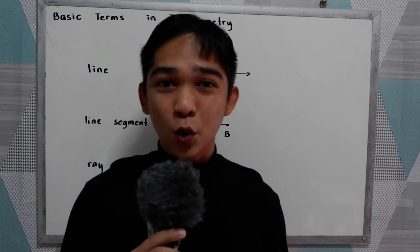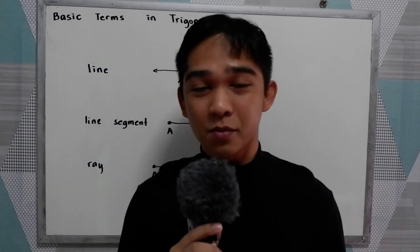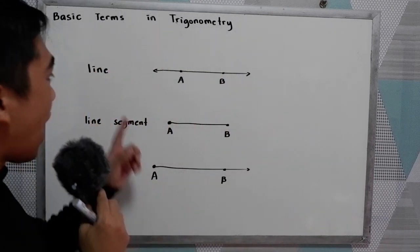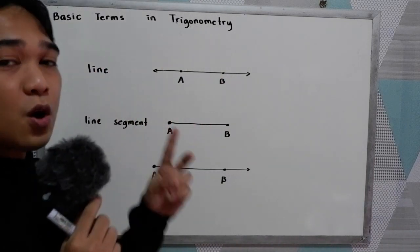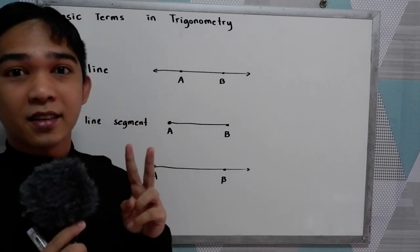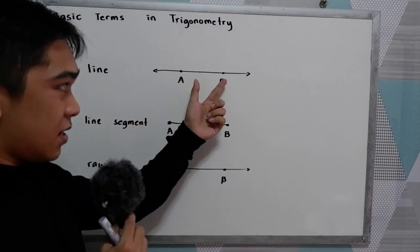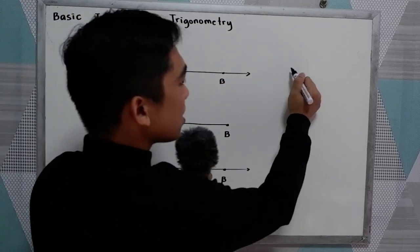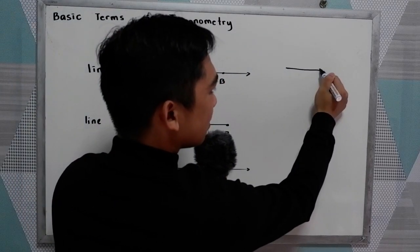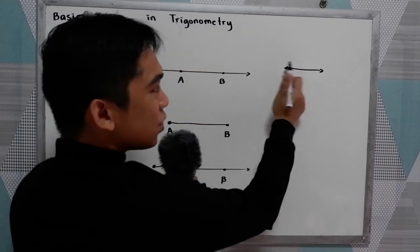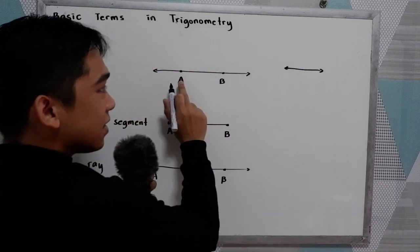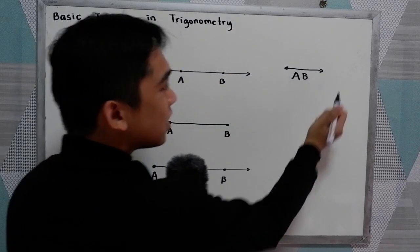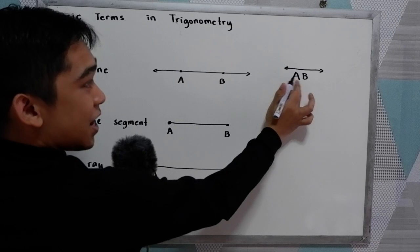Good day everyone. Today we will be discussing the basic terms in trigonometry. Let's have our first term: the line. We know that two points determine a line. Let's say we have points A and B and we have a line. To name a line, we use the symbol with two arrowheads, naming the points. So this is line AB.